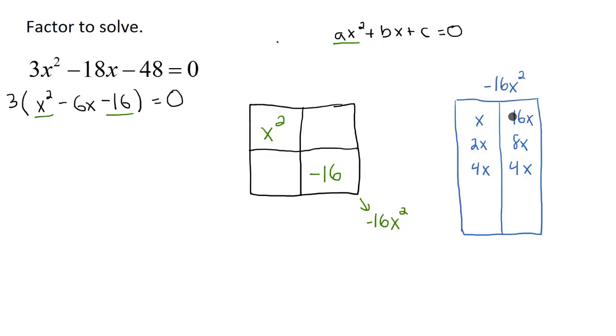Now because this is -16, one of these two terms has to be negative. And because they have to add up to be -6 here, I'm going to make my bigger number negative so that ensures when I add these two terms together I'm going to get a negative answer. So the 1x - 16x is going to be -15x, which is not -6x, so I've got to keep going.